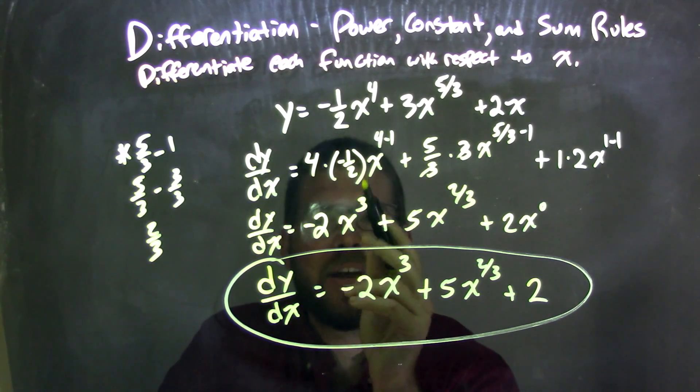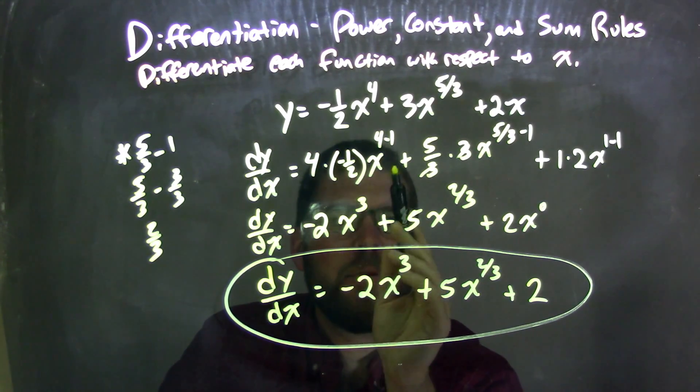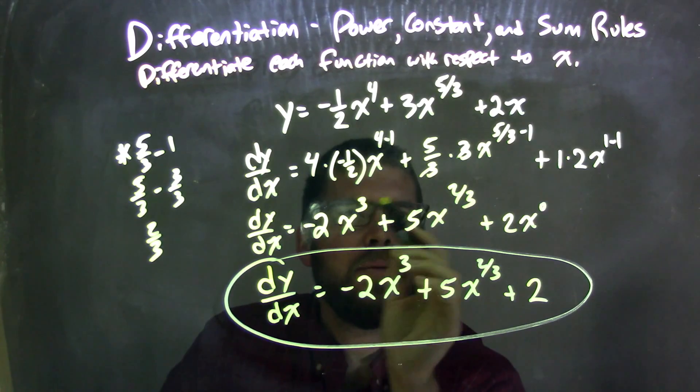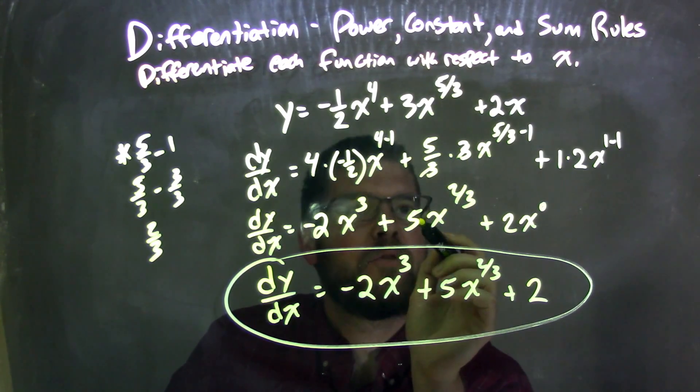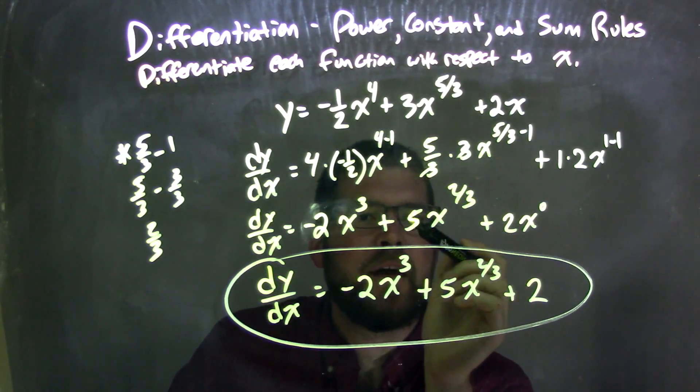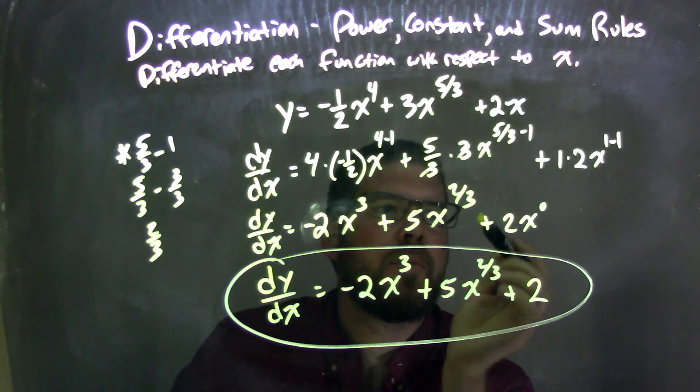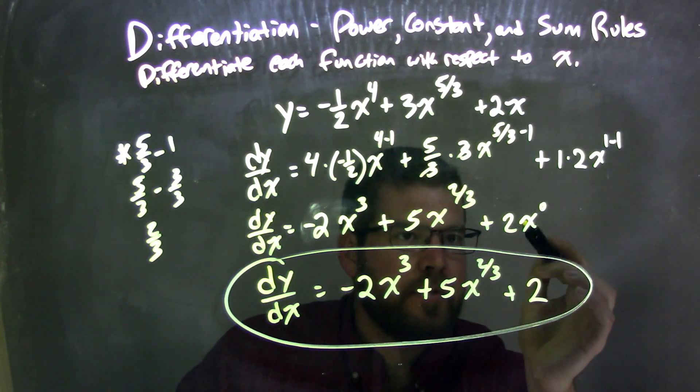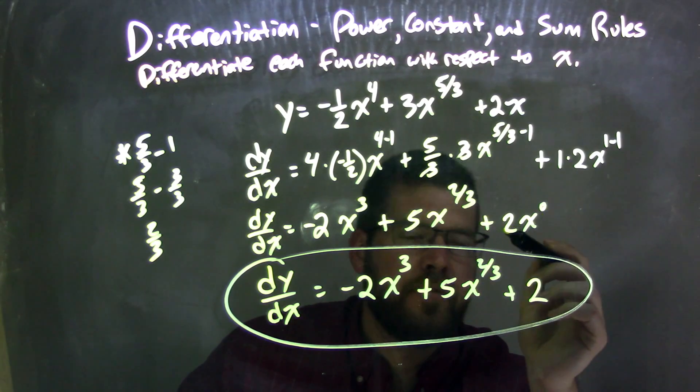Simplifying now, four times negative one-half is negative two, four minus one is three, so we have negative two x to the third. Five-thirds times three was just five, and five-thirds minus one, which was two-thirds, we have five x to two-thirds power. One times two is two, and one minus one is zero, so we have two x to the zero power.